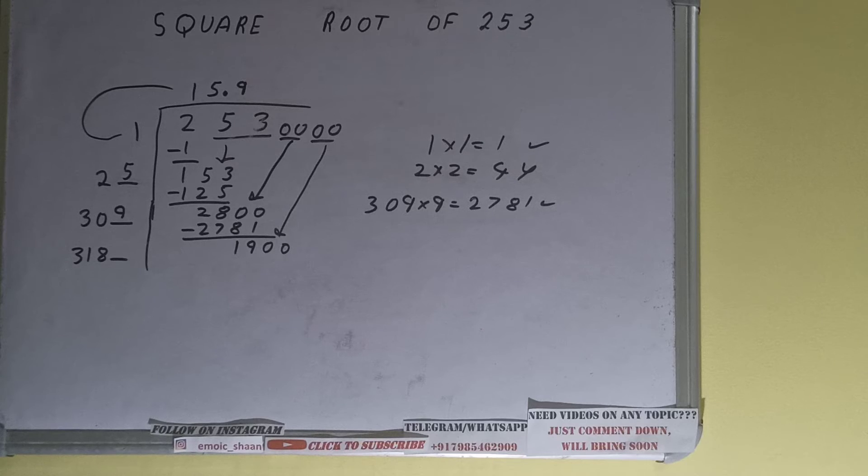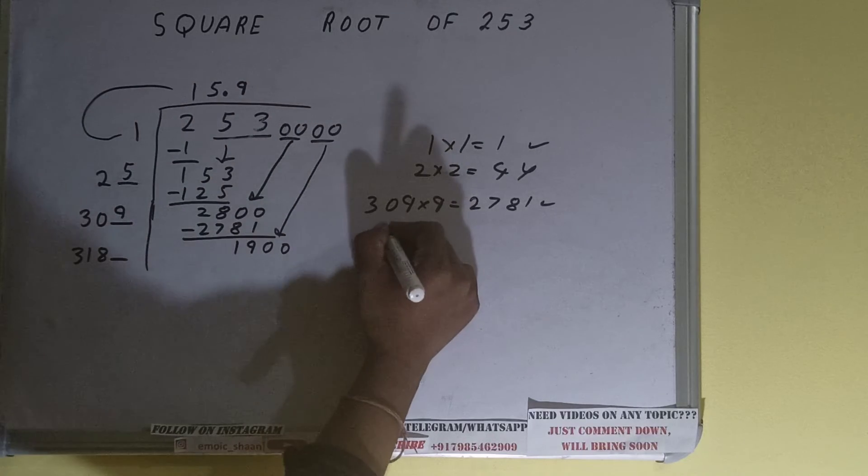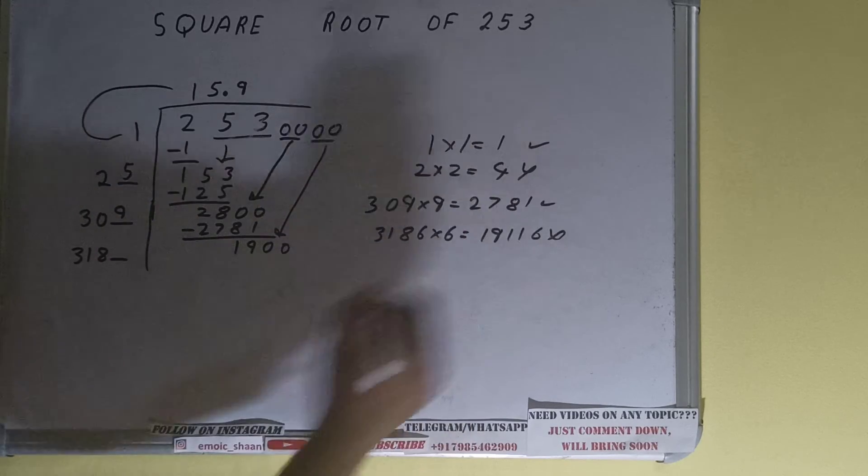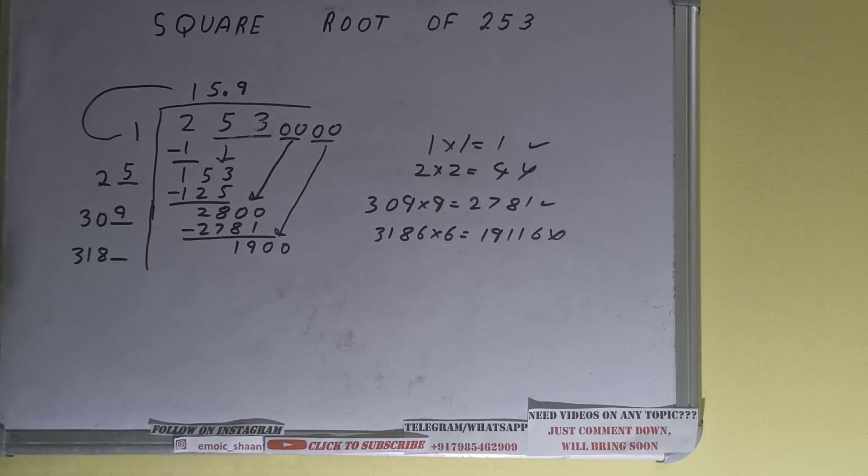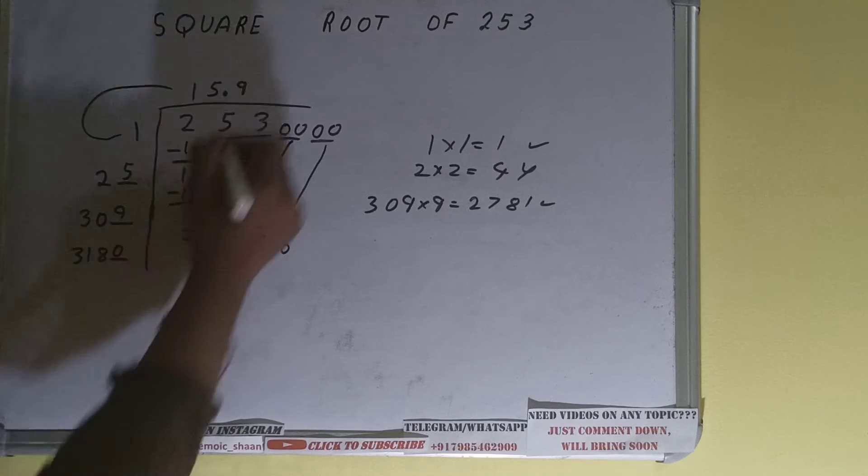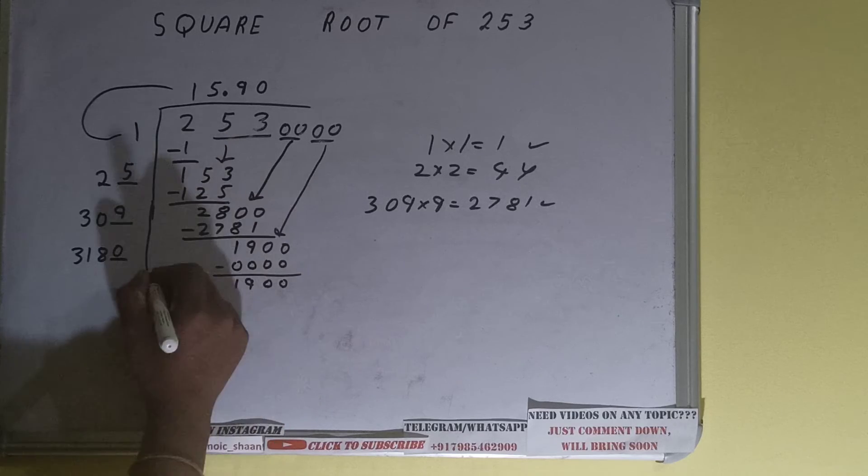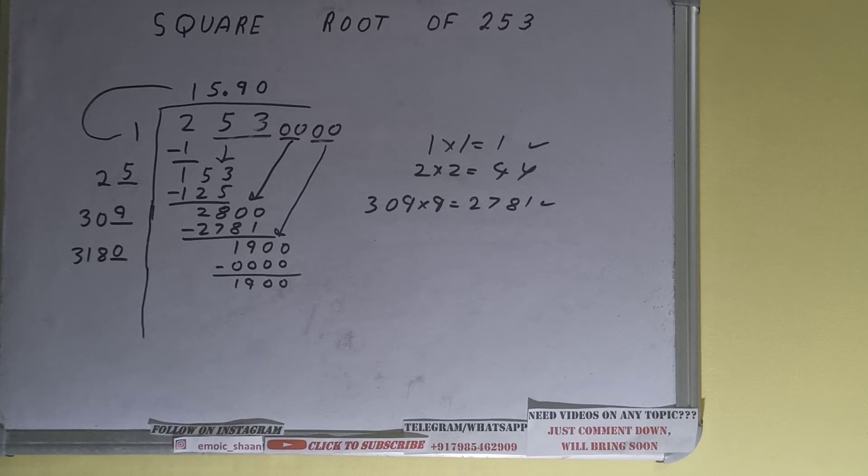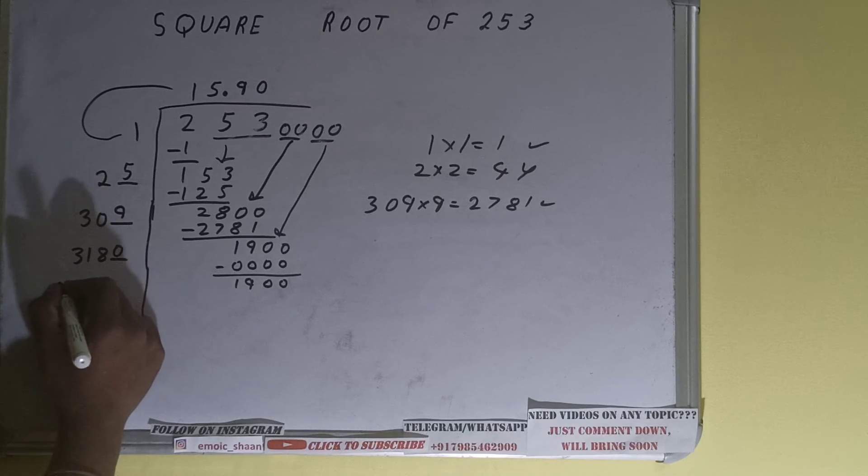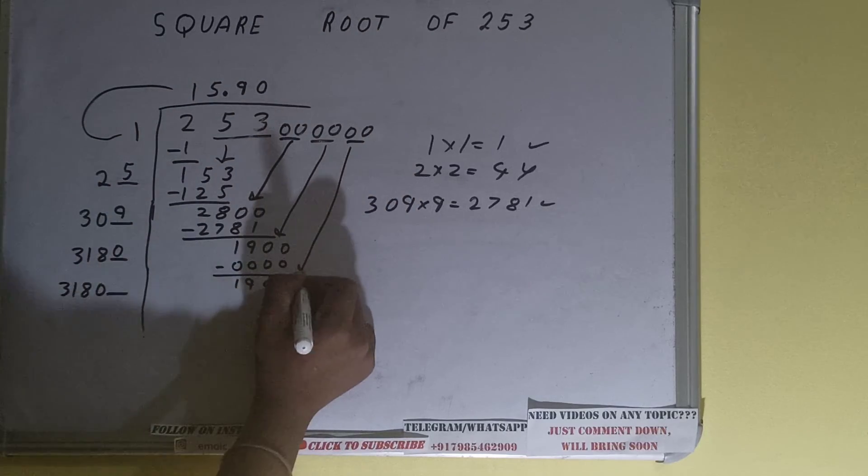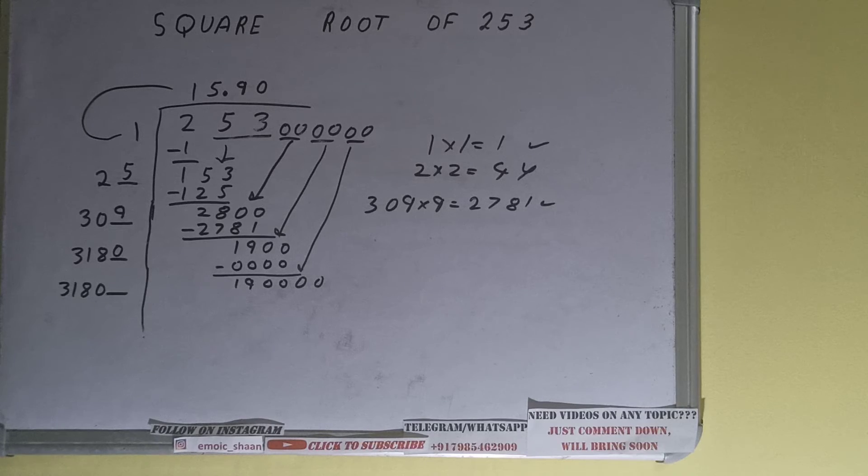Now we can try six times. 3186 into 6 we can try, it will be 19116, that is slightly bigger than the number. Oh sorry, there is one mistake. It is 1900. So even if I use one here I'll get a number greater than 1900, so we have no choice but to use zero. Once we use zero, again 1900 will be left. Over here 3180 into 0 we did, so add both. 3180 plus 0 will be again 3180, and one digit extra over here. Bring one more pair of zeros down and number will become as 190000.